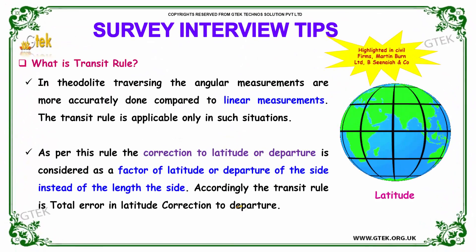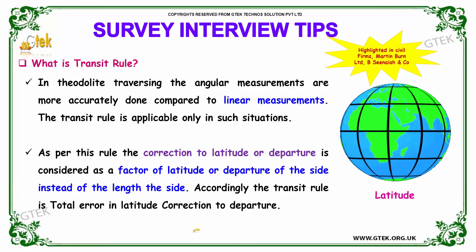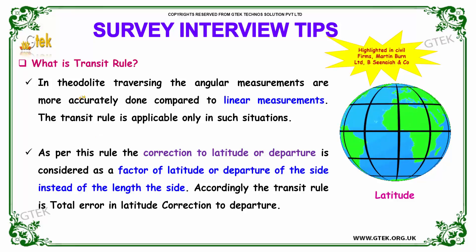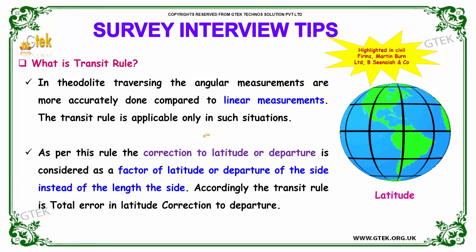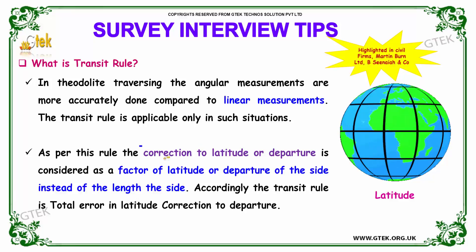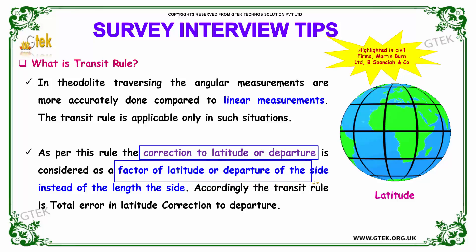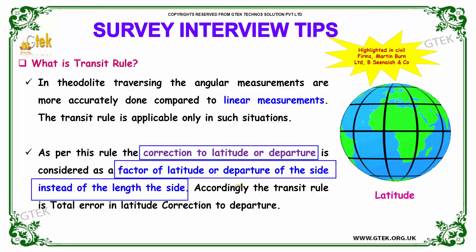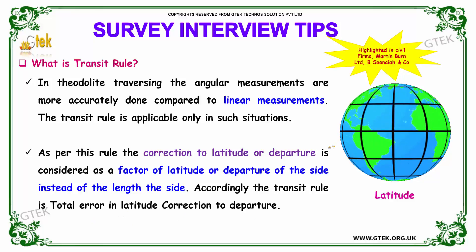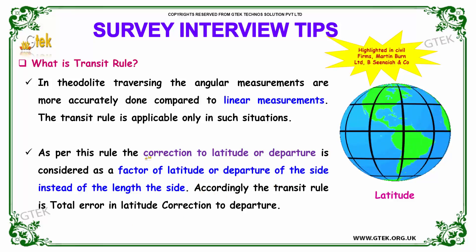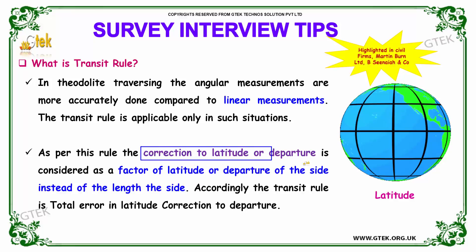Our next question is: what is the transit rule? In theodolite traversing, angular measurements are more accurately done compared to linear measurements. The transit rule is applicable only in such situations. As per this rule, the correction to latitude or departure is considered as a factor of latitude or departure of the side, instead of the length of the side. Thus, the transit rule deals with correction to latitude or departure.